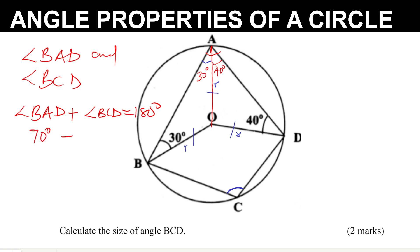So therefore angle BCD equals 180 minus 70 degrees, and this one gives 110 degrees. So this angle should be 110. That is the size of angle BCD.